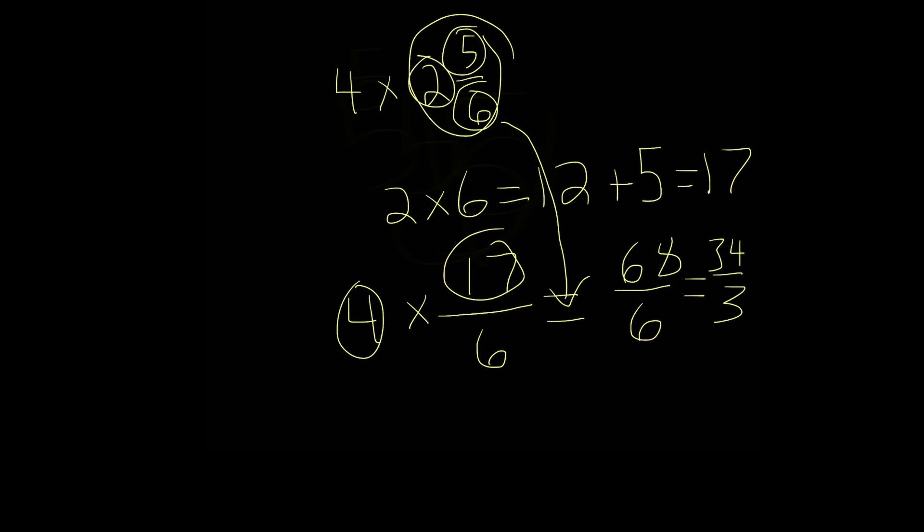And this can be simplified into 34 over 3. And this is actually an improper fraction. And if you want, you can change this into a mixed number. How would we do that? Well, let's first divide 34 over 3.